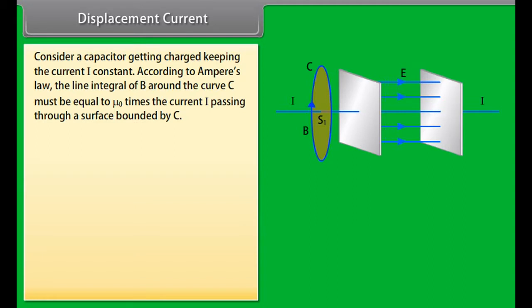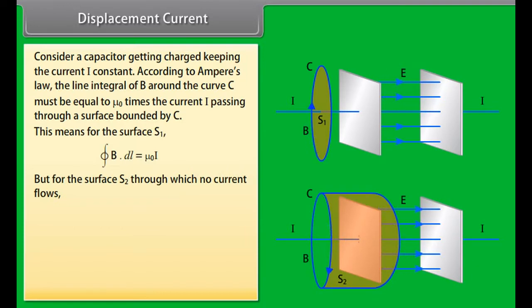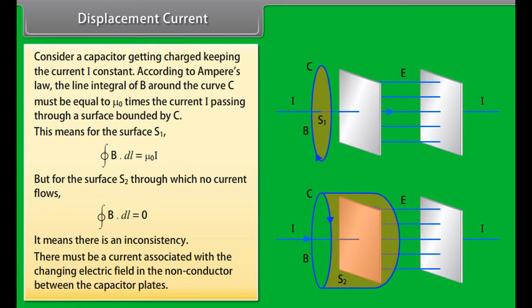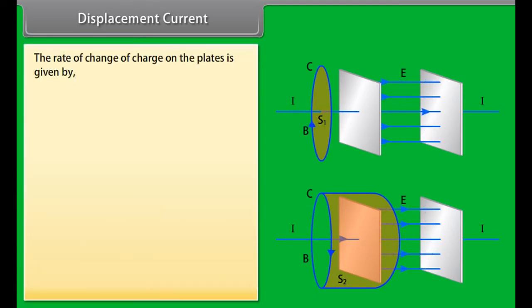Consider a capacitor getting charged keeping the current I constant. According to Ampere's law, the line integral of B around the curve C must be equal to mu not times the current I passing through a surface bounded by C. This means for the surface S1, closed integral of B dot DL is equal to mu not I. But for the surface S2 through which no current flows, closed integral of B dot DL is equal to zero.